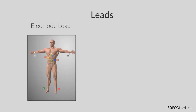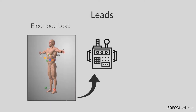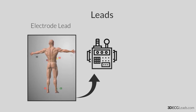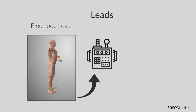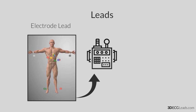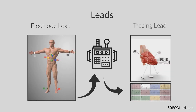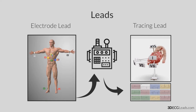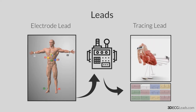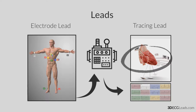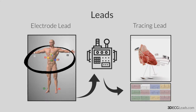An ECG lead can refer to the wired connection that goes from the skin electrode to the machine — we will refer to this as electrode leads. Secondly, the lead can also refer to the tracing that is recorded by the ECG machine — we will refer to this as tracing leads. So to clarify, when we say a 12-lead ECG has 10 leads, what we really mean is that a 12-lead ECG tracing is recorded by 10 skin electrodes.